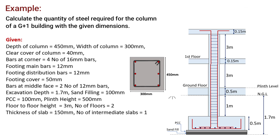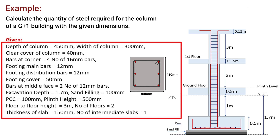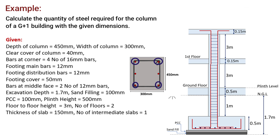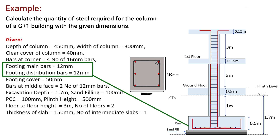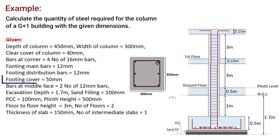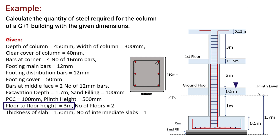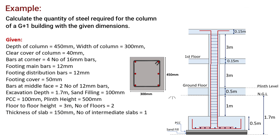Suppose we need to calculate the quantity of steel required for the column of a two-story building with the given dimensions. The size of the column is 300 x 450 mm, clear cover is 40 mm. We have four main bars of dia 16 mm and two side bars of dia 12 mm. Footing main bars and distribution bars are 12 mm. Footing cover is 50 mm, excavation depth is 1.7 m, sand filling 100 mm, PCC 100 mm, plinth height 500 mm, floor to floor height 3 m, number of floors 2, slab thickness 150 mm, and number of intermediate slabs is 1.